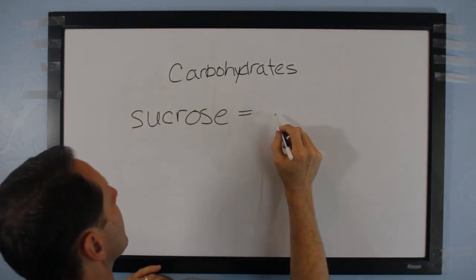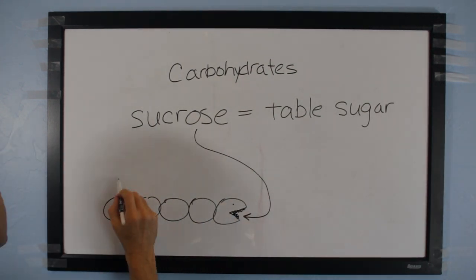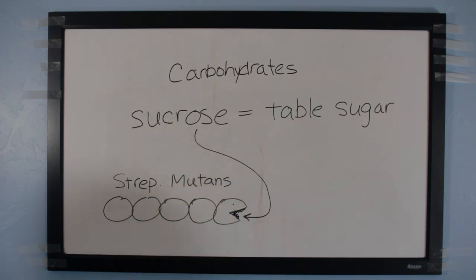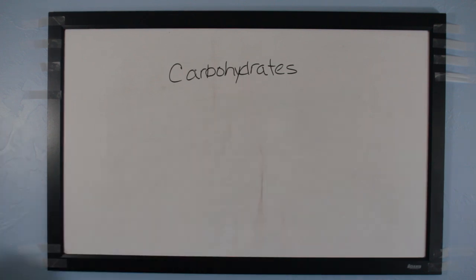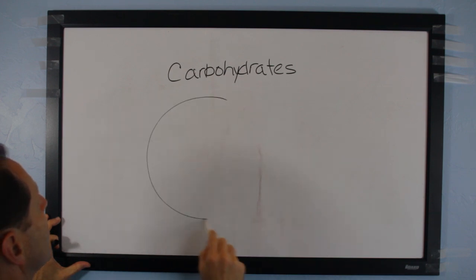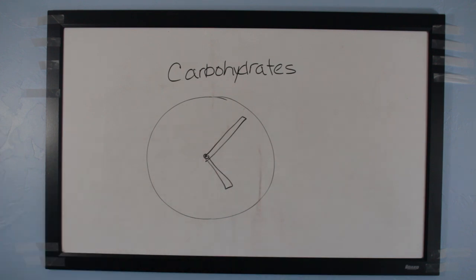Sucrose, or common table sugar, feeds the Streptococcus mutans a lot more than the others. It is in everything, including ketchup, which makes it hard to avoid. How much sugar you eat isn't as important as how often. Streptococcus mutans are tiny and have tiny stomachs. When they eat the carbohydrates, it only takes a few minutes for them to digest and produce the acid. If you don't eat carbohydrates often, then the bacteria won't produce the acid very often.